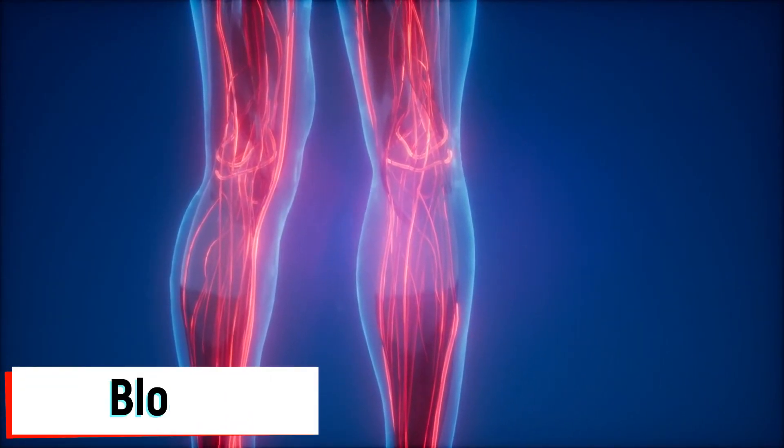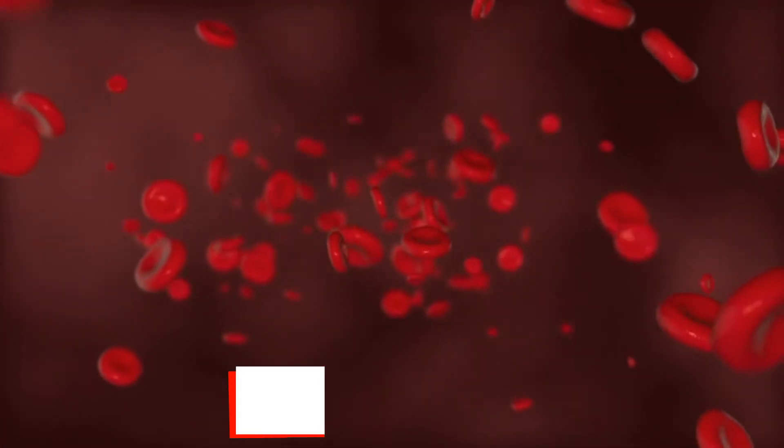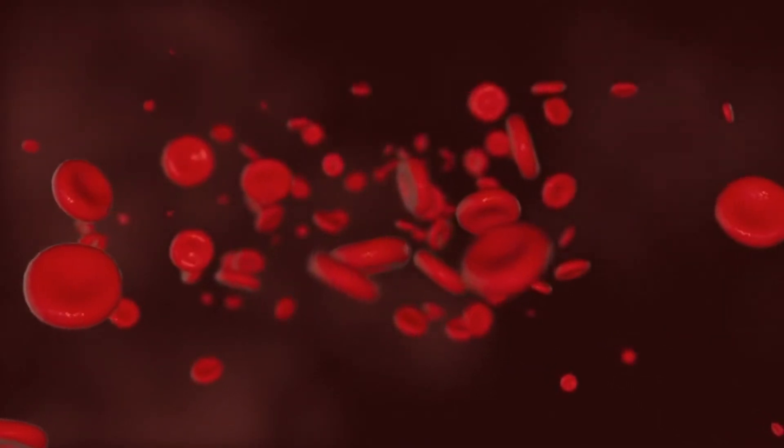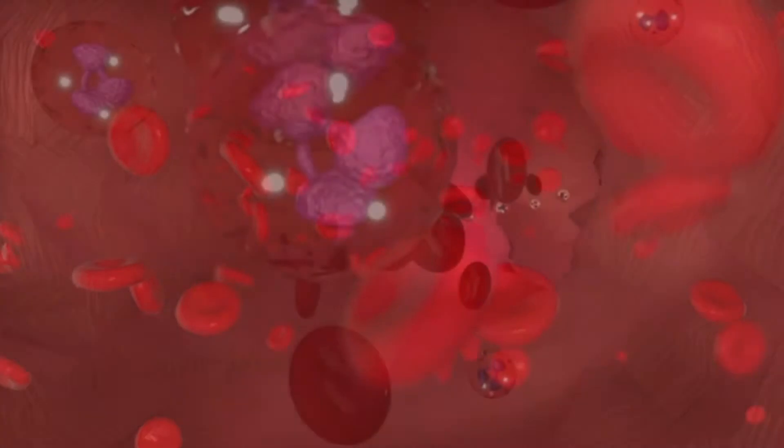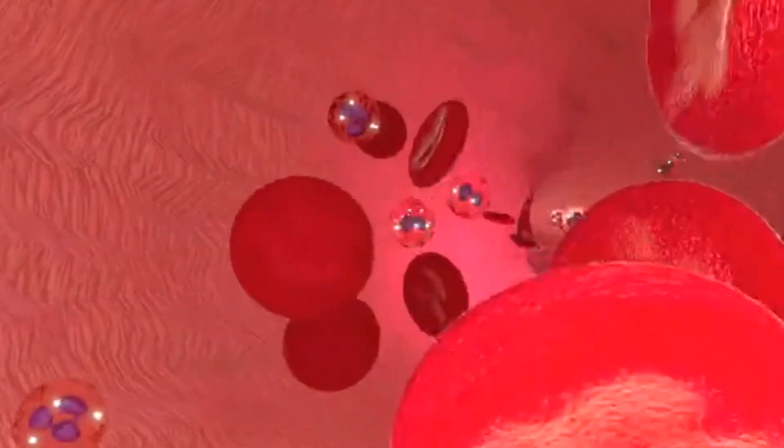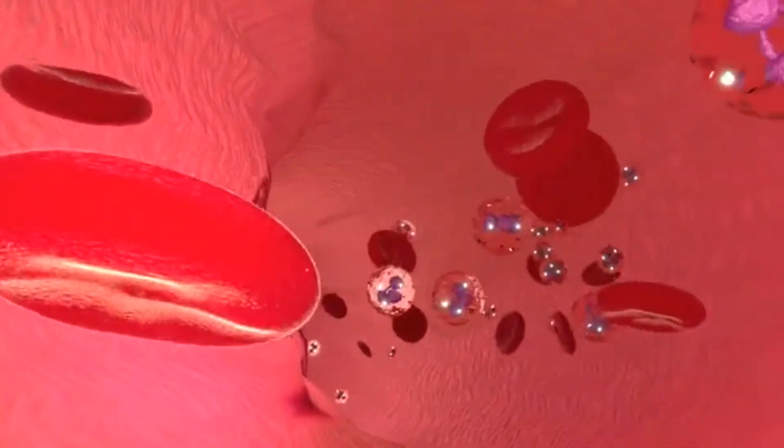Blood is mainly made of a pale yellow liquid called plasma. It contains three types of cells: red blood cells which carry oxygen throughout the body and give blood its red color, white blood cells which fight infections, and platelets which help to stop bleeding if there is a cut.